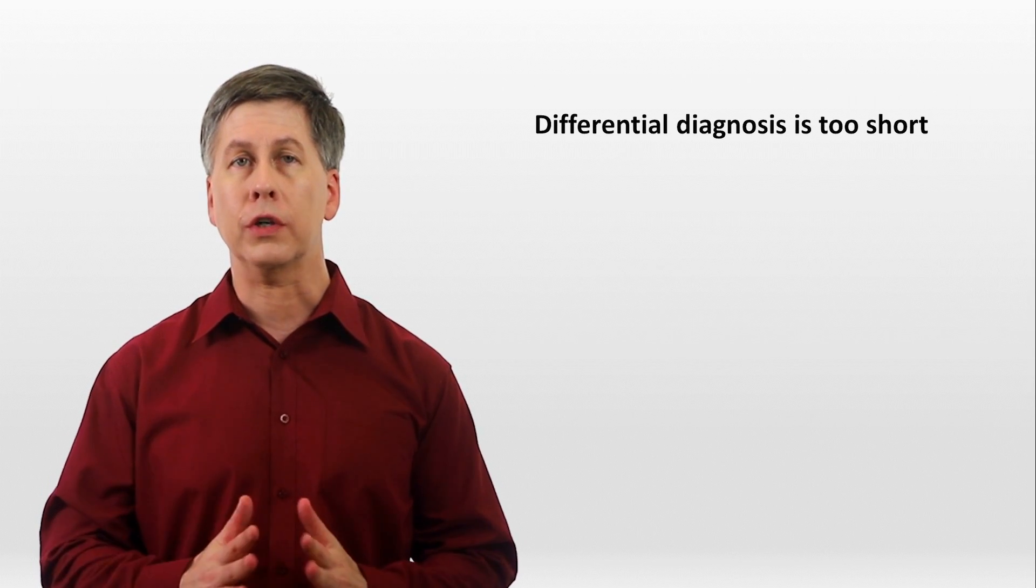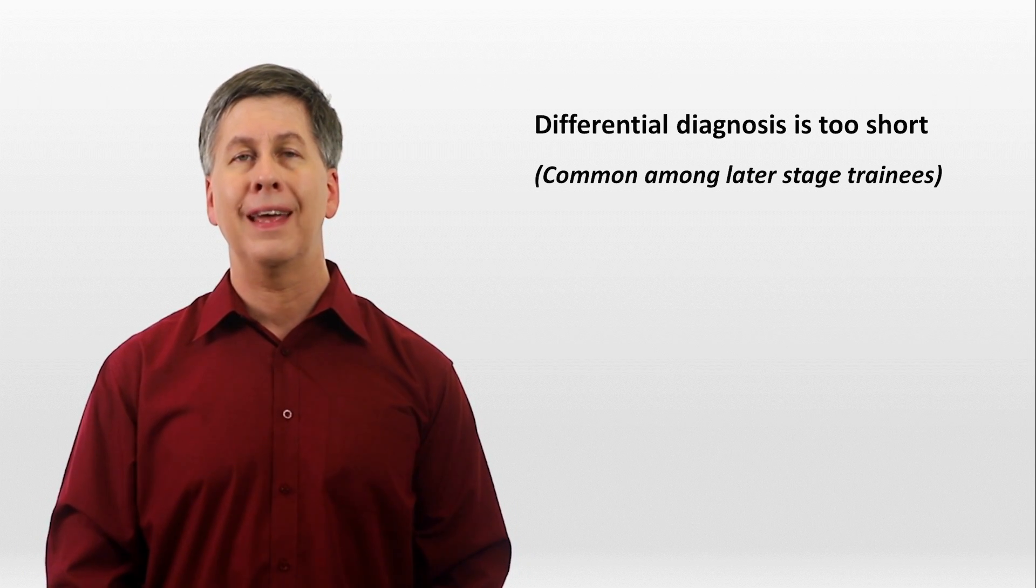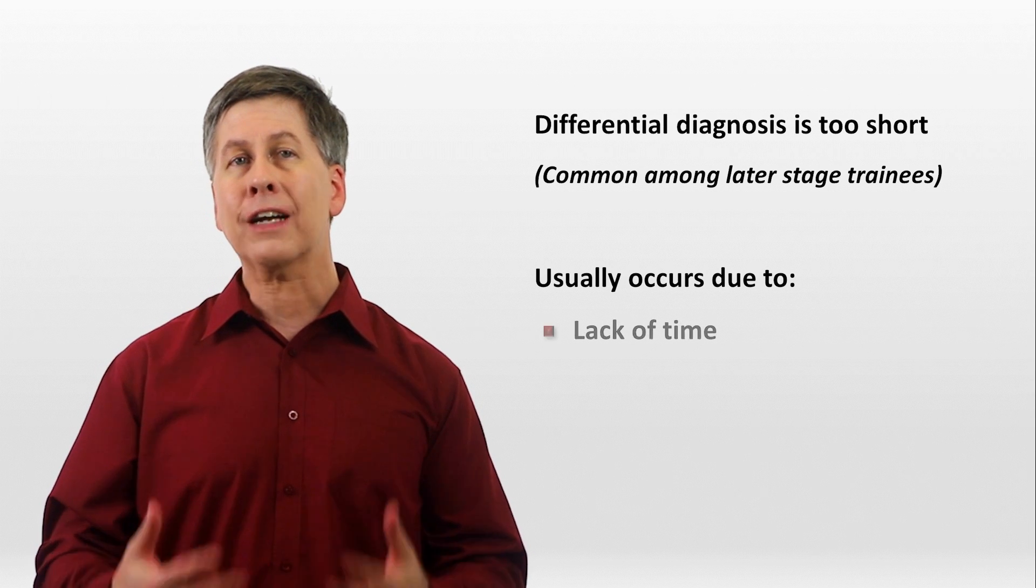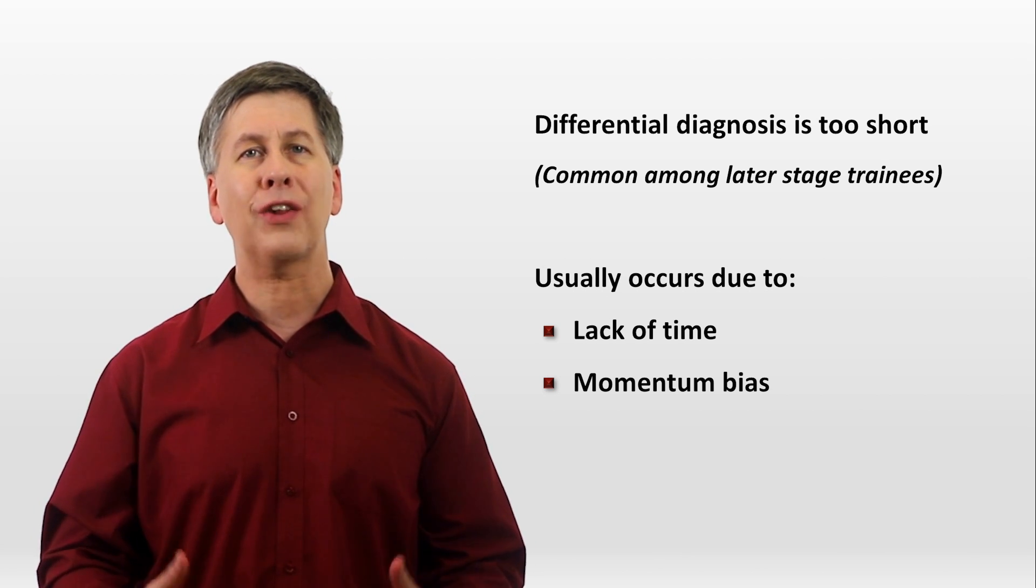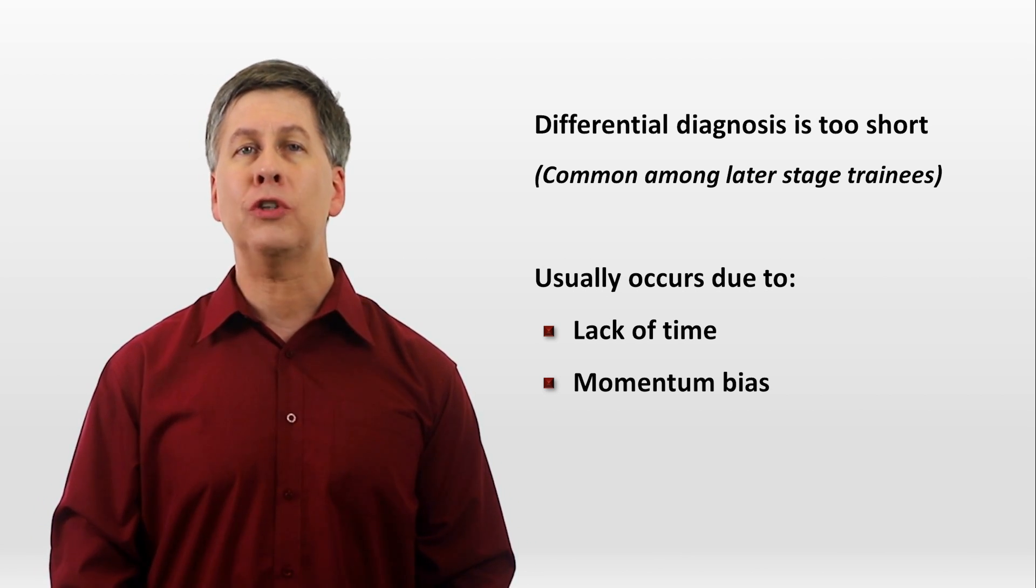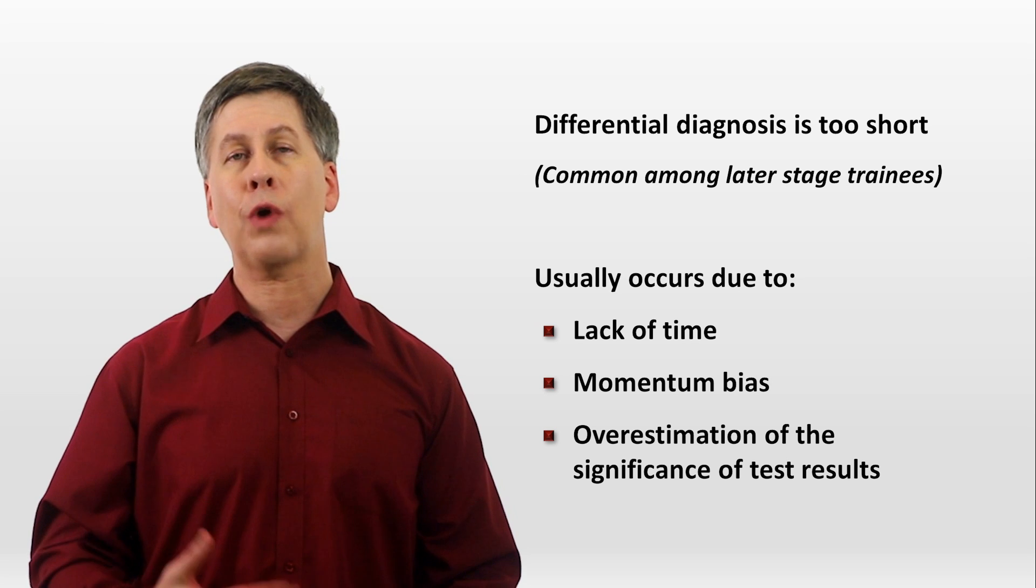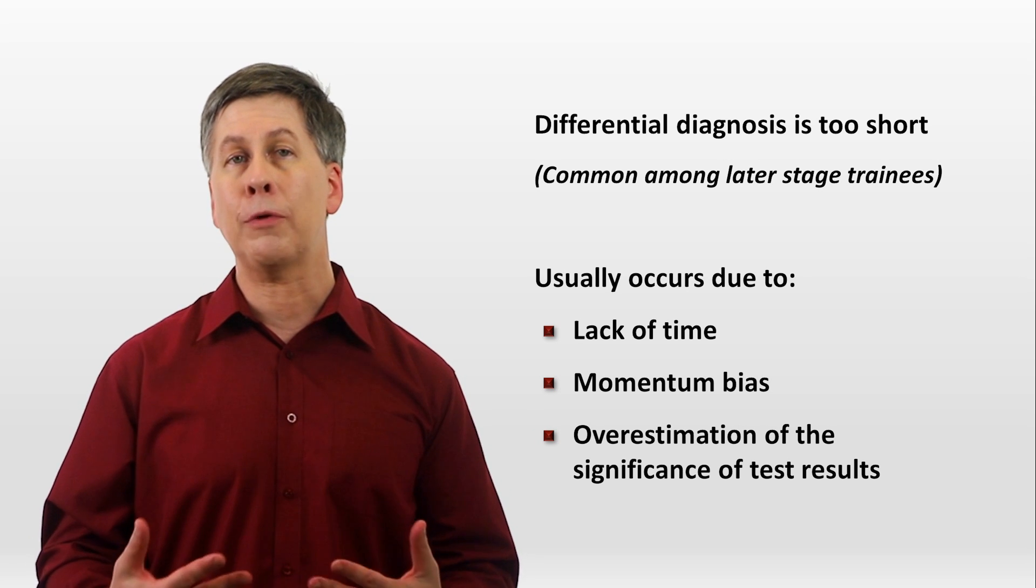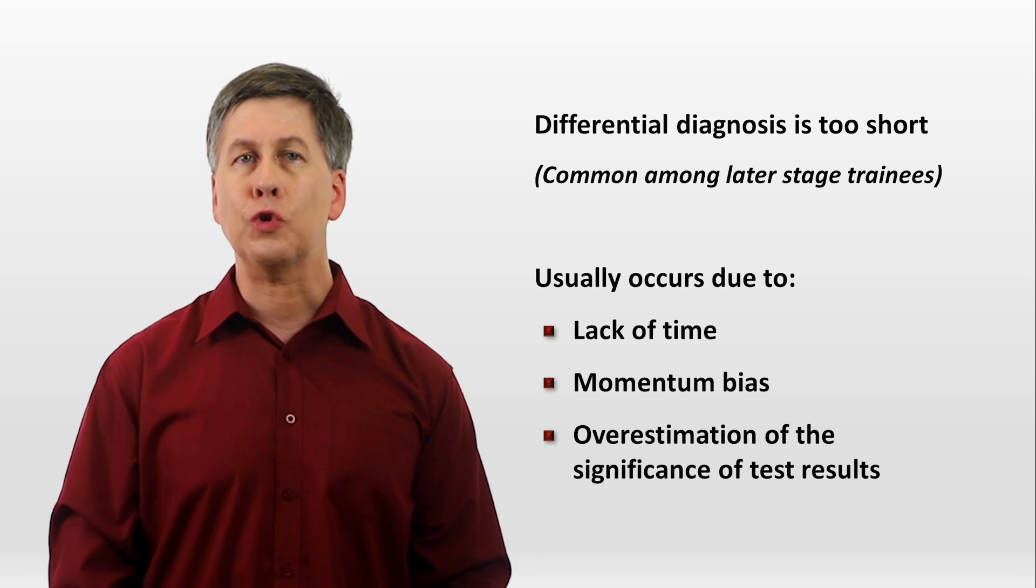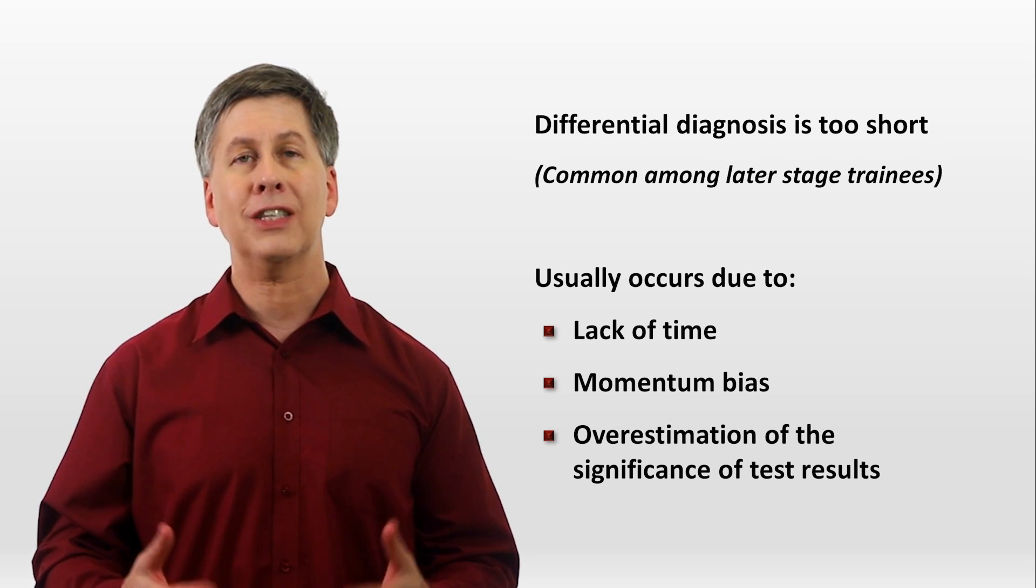The opposite of this also occurs when a differential diagnosis is too short. This is common among later stage trainees, such as interns. It occurs usually due to either a lack of time or from momentum bias in which a previously suggested diagnosis is uncritically accepted as probable. It can also be due to an overestimation of the significance of a test result. For example, in a patient presenting with chronic, progressive shortness of breath, if an echocardiogram finds a diastolic relaxation abnormality, the clinician might incorrectly assume that this relatively nonspecific finding must indicate the patient has diastolic heart failure.